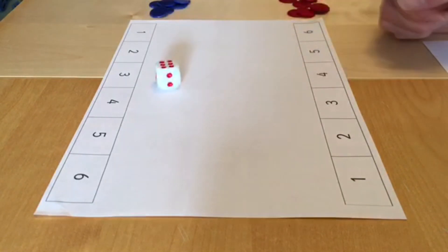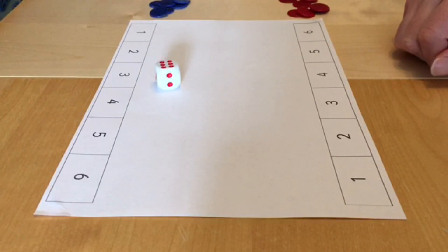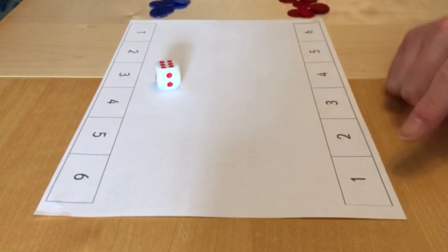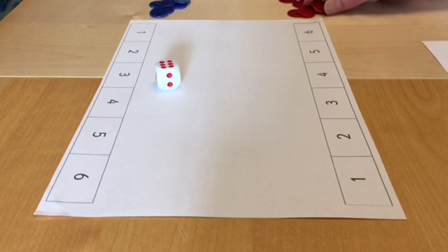Player one rolls the dice and then they try to match the number of dots on the dice to one of their numbers. If they can do that, they cover it with a counter.